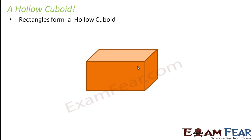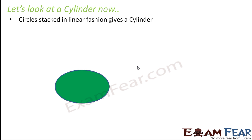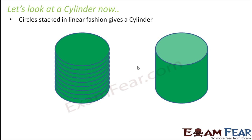What we understand from this is that it doesn't matter in which pattern they are arranged — two-dimensional shapes are arranged in one pattern or another to form a three-dimensional object. To add further to this, let's take the example of a cylinder. A cylinder is a three-dimensional object, and we can build it from a two-dimensional circle. You can do this at home using coins — coins are circular, and when you stack one coin above the other, you get a cylinder. That's how many circles give rise to a three-dimensional cylinder.